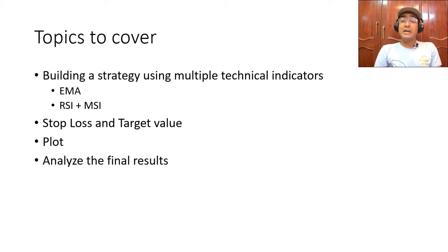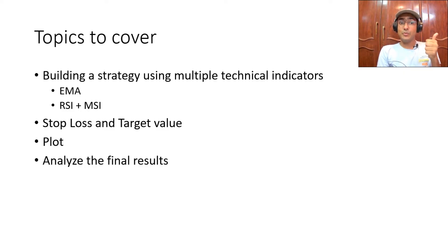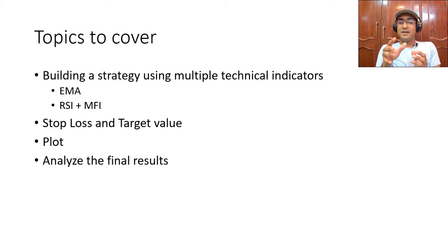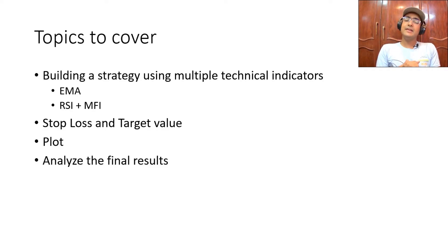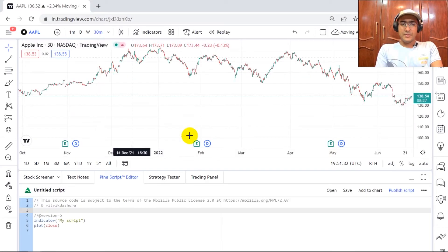We'll start by building a strategy using multiple technical indicators. I'll be using two types: first is EMA (exponential moving average), and the second is a mix of RSI and MFI. In the last video, we made our own technical indicator by mixing these two, and now I'll use it to make a trading strategy. After that, we'll implement stop loss and target value, plot some graphs, and analyze the results.